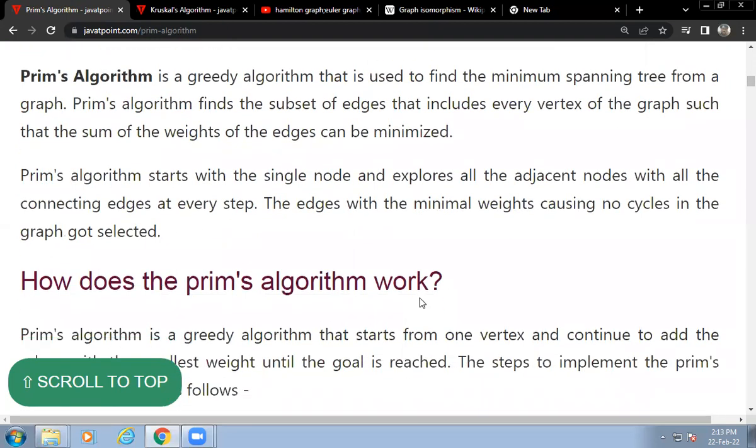Prim's algorithm is a greedy algorithm that is used to find the minimum spanning tree from a graph. Prim's algorithm finds the subset of edges that includes every vertex of the graph such that the sum of weights of the edges can be minimized.